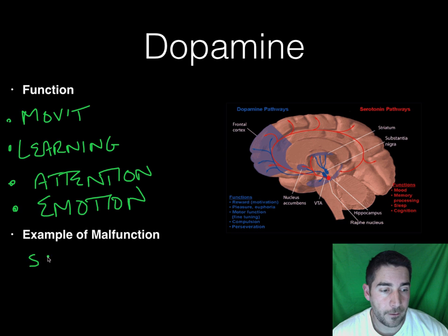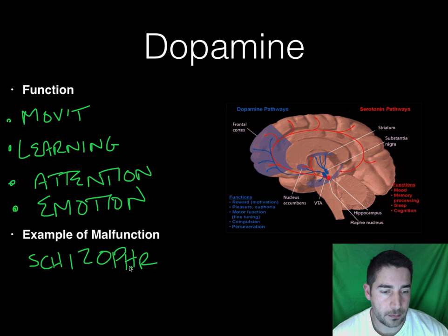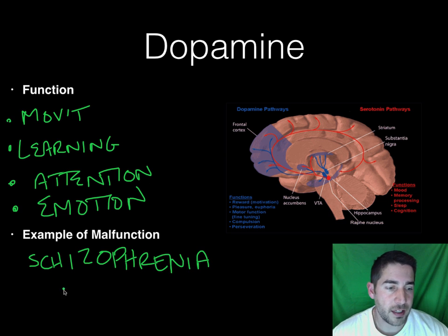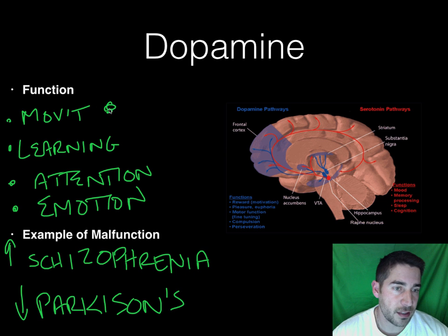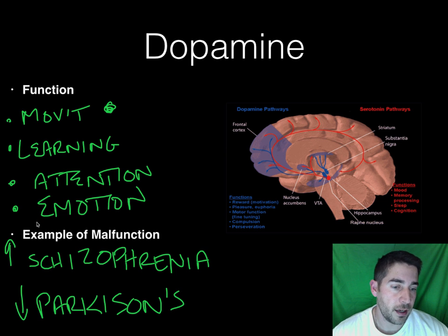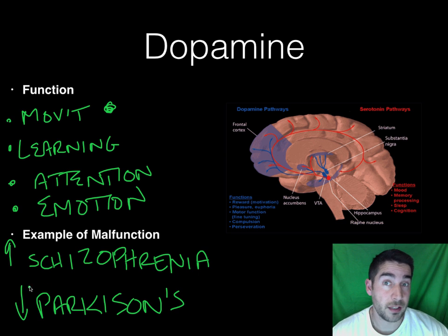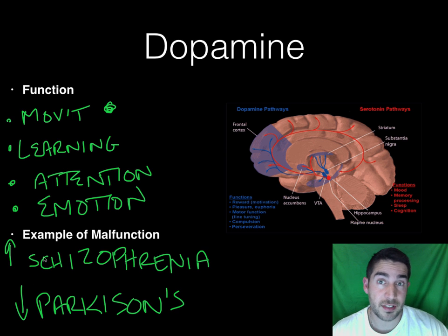If you have too much dopamine, that can lead to schizophrenia. Too little dopamine can lead to Parkinson's disease. In Parkinson's disease, you have decreased movement — you see that big time. In schizophrenia, that's your emotions and your attention kind of out of whack. Schizophrenia, as we'll learn in the abnormal unit, is a break from reality — it's often confused with multiple personality disorder, but it's not. There are a lot of different types and degrees of schizophrenia, so dopamine is a big one.